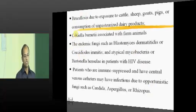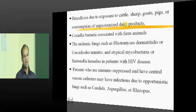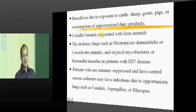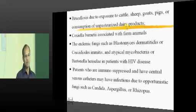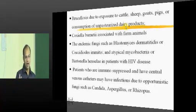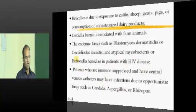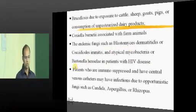Brucella osteomyelitis is seen in patients who take unpasteurized dairy products or unboiled milk. If you consume unpasteurized milk directly, you are at risk of Brucellosis — be careful. In patients with HIV or immunocompromise, various fungi such as Candida, Aspergillus, Coccidioides, and Blastomyces can cause osteomyelitis.